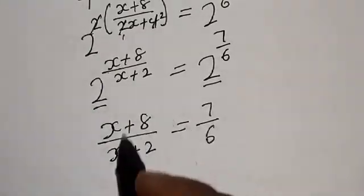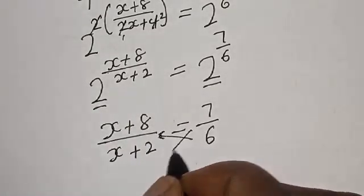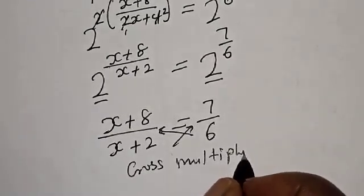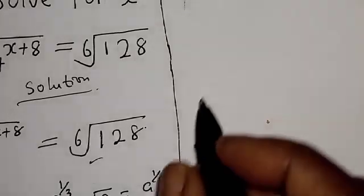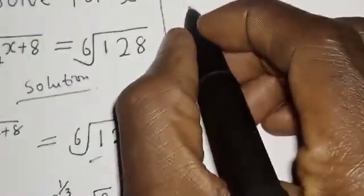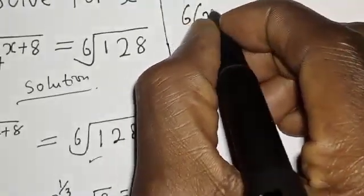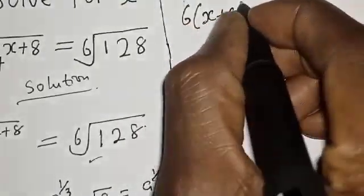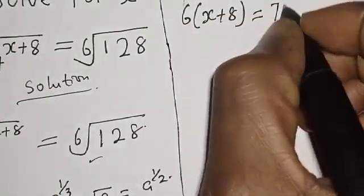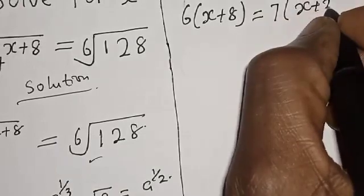From here, let's cross multiply. Cross multiplying gives us 6 times (x+8) is equal to 7 times (x+2).